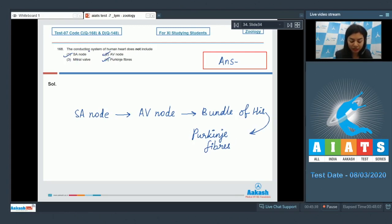The mitral valve guards the opening of left atrium into the left ventricle. Thus it is present between left atrium and left ventricle and is not a part of conduction system of human heart. It prevents the back flow of blood from left ventricle into the left atrium during ventricular systole. The correct answer is option number 3.